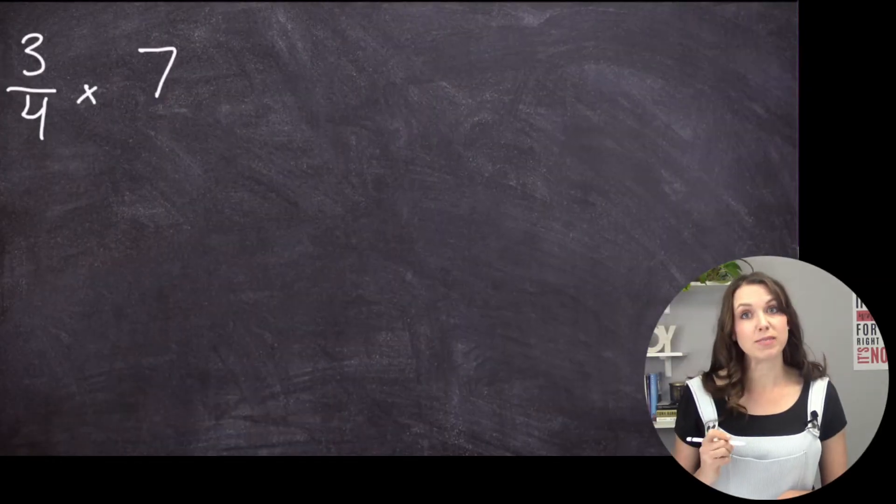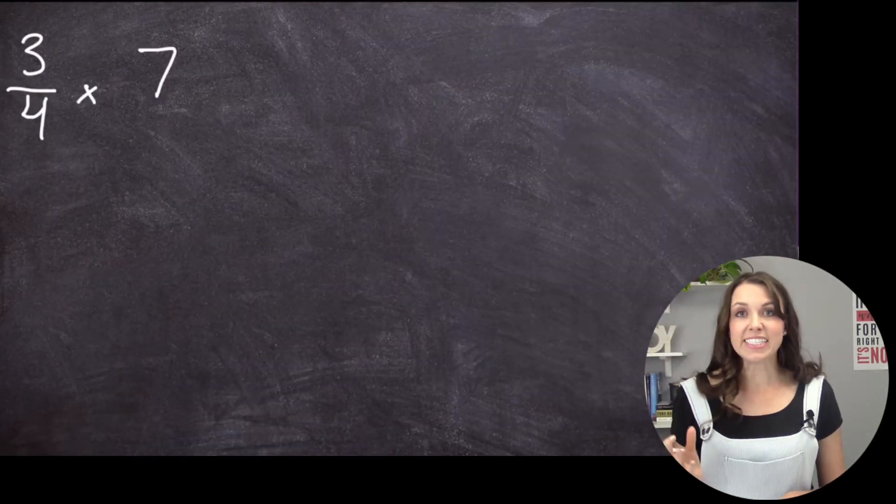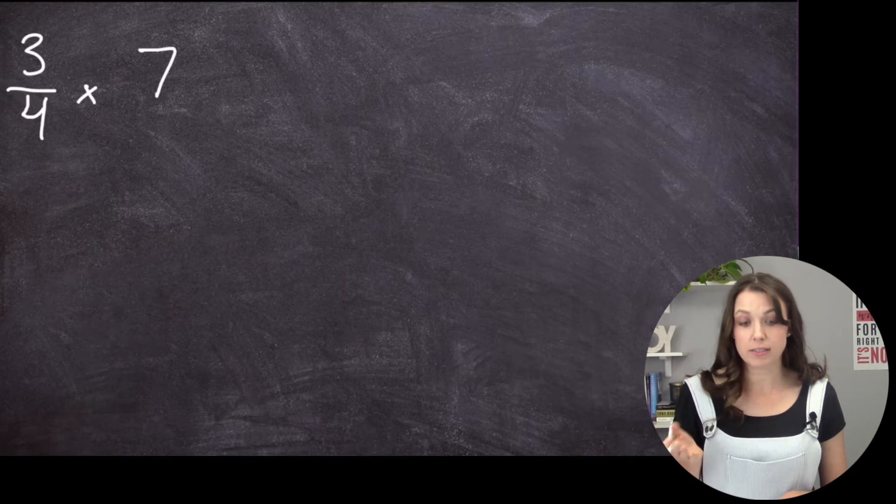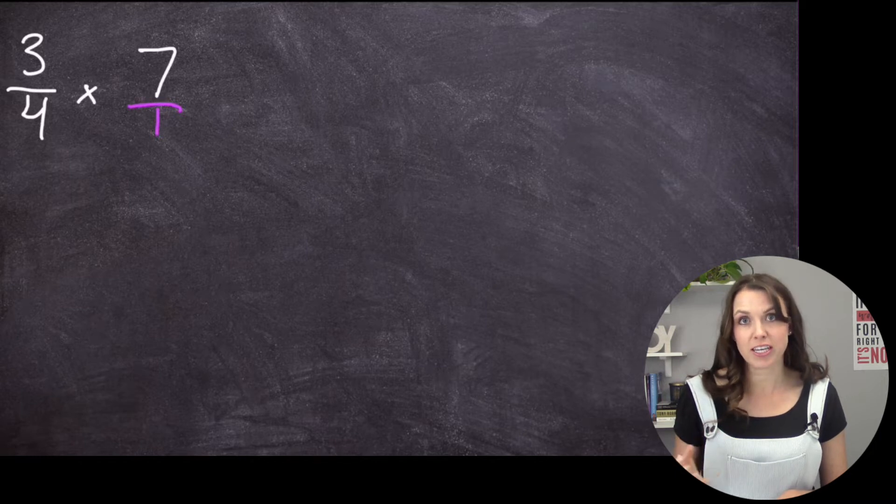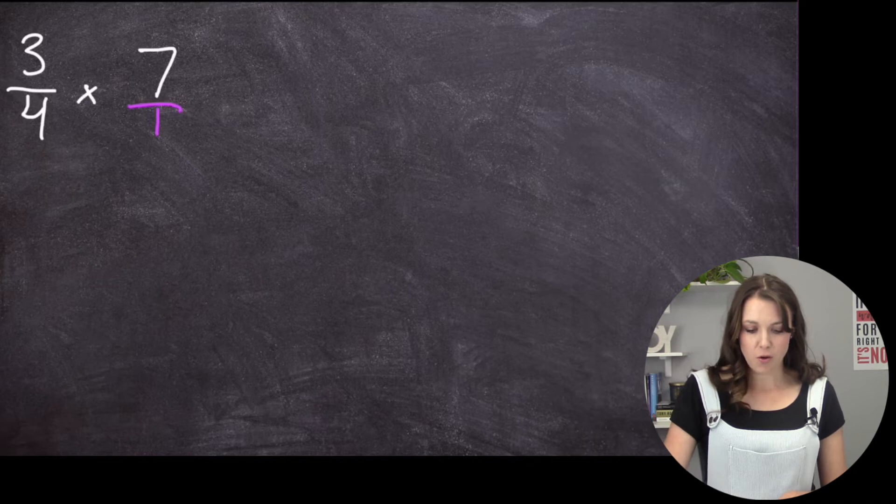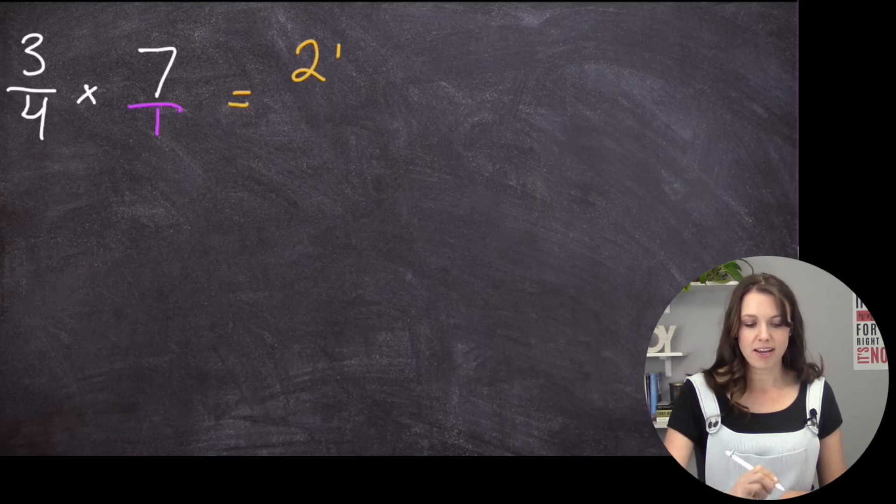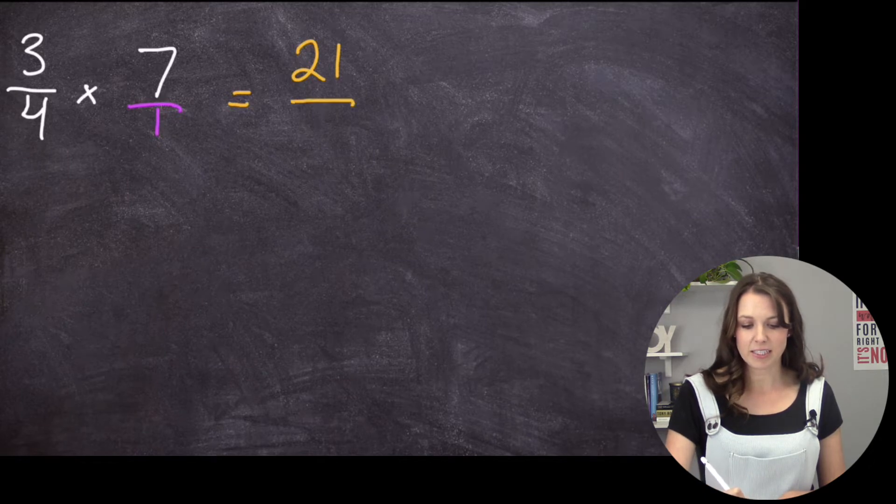3/4 times 7. Now anytime you have a whole number all by itself, like we have 7 here, you can just put a 1 underneath it. And that's going to turn it into a fraction so that you can multiply just like we are. So I'm going to go 3 times 7 is 21. And 4 times 1 is 4.